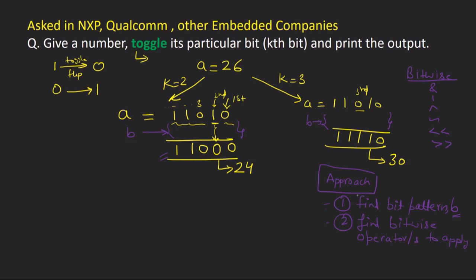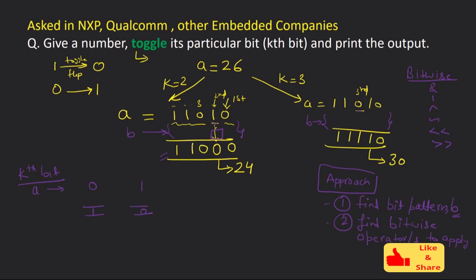The kth bit of A can be either 0 or 1 — for k = 2 our kth bit was 1, and for k = 3 it was 0. What we want is to toggle it: 0 should become 1 and 1 should become 0. The question is: what should I place in B at that position — 0 or 1 — and what operator should I apply?